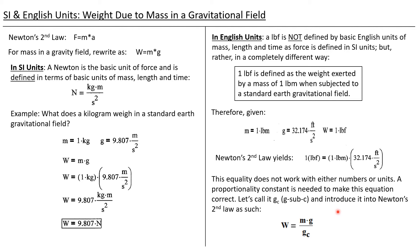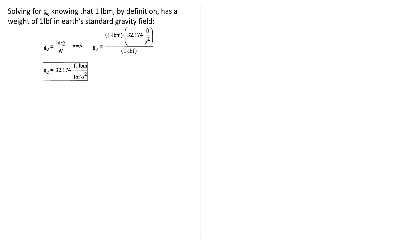We're going to solve this by introducing a proportionality constant into this and many other equations. We call this proportionality constant g_c, and we introduce it into the denominator of Newton's second law. So we now have: weight equals mass times acceleration of gravity divided by g_c. Solving for g_c with one pound-mass on the surface of the earth where standard gravity is 32.174 ft/s² and the defined weight is one pound-force, we get g_c = 32.174 ft·lbm / (lbf·s²).